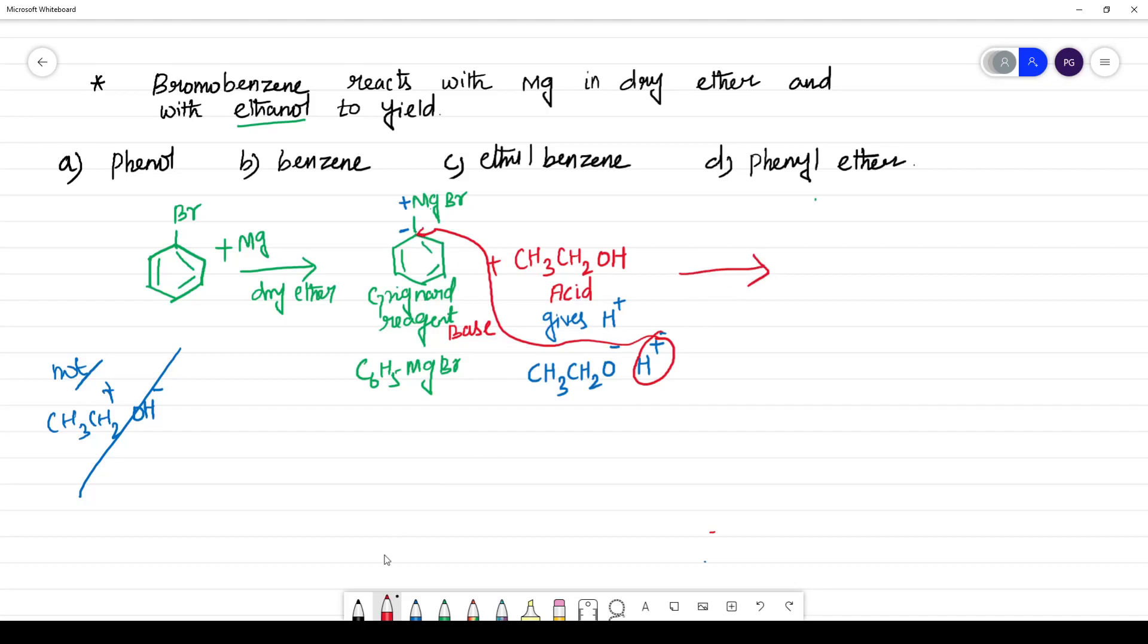Now, the product is, you have Mg and you have Br. This minus will attack this site. So it will be OCH2CH3. What is this product?